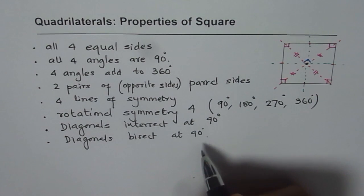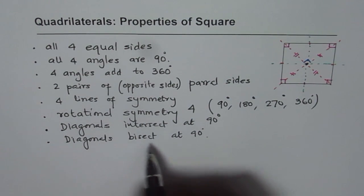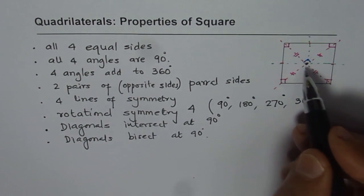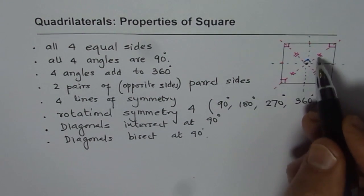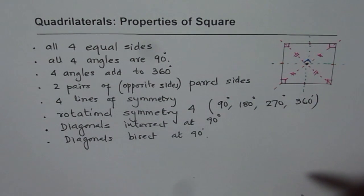So, we can say that also. Anyway, diagonals bisect, that means when they intersect, then the two portions of the diagonal are equal. So, these are some properties of squares.